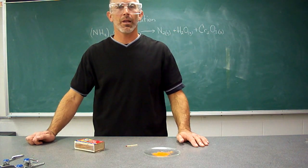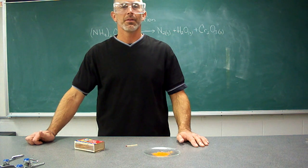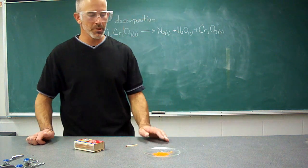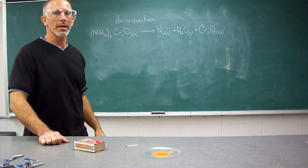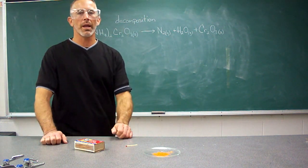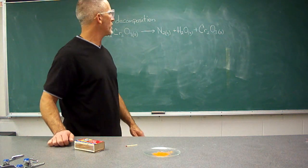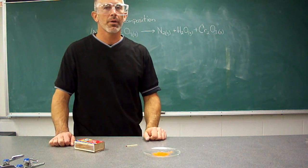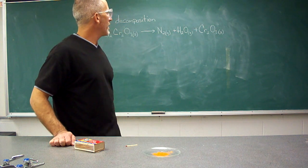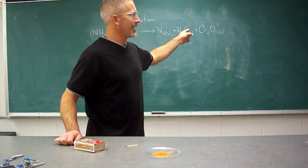We're here in chemistry class identifying types of chemical reactions. This is a decomposition reaction in which ammonium dichromate will be broken down into some of its simpler components: nitrogen gas, water vapor, and chromium-3 oxide.